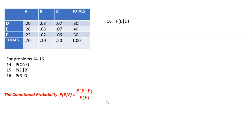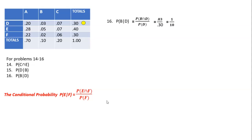Now find P(B | D) — the probability of B given D. The condition is that we are given D. Using the formula: P(B ∩ D) / P(D). The intersection of B and D is 0.03 (same cell). The total for D is 0.30. So P(B | D) = 0.03 / 0.30 = 1/10.